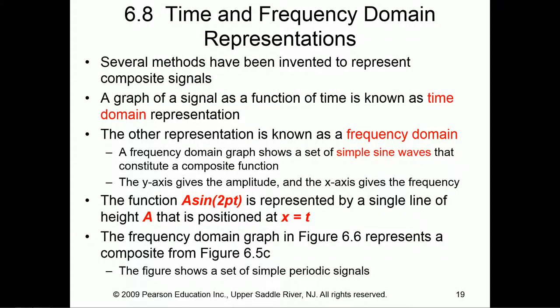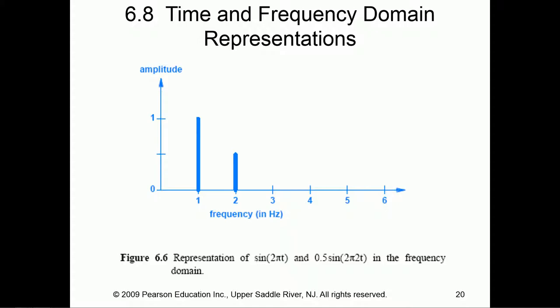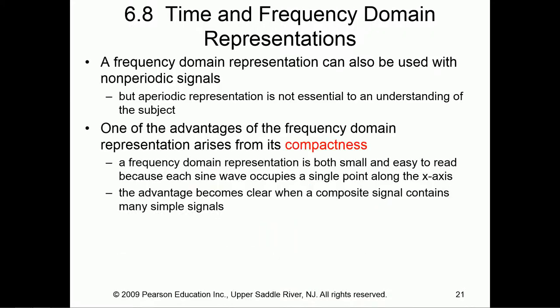There have been several methods invented to represent a composite signal. One of the big ones is our frequency domain, our time domain, our amplitude domain, and a few other types of domains that we'll get into when we talk about multiplexing. The first one I want to really talk about is our time and frequency: frequency in hertz and the actual amplitude. You start noticing this is more looking like a digital signal. A time and frequency domain can also be represented as non-periodic signals.